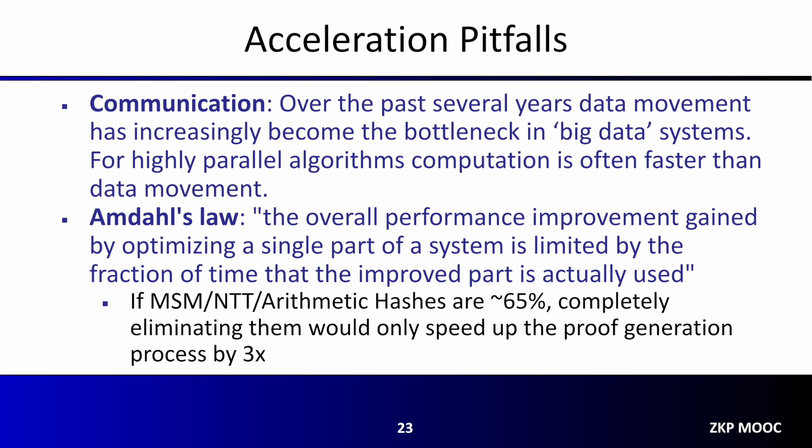A final pitfall of hardware acceleration is Amdahl's Law. Amdahl's Law states that the overall performance improvement gained by optimizing a single part of a system is limited by the fraction of time that the improved part is actually used. More simply, in the case of ZKP systems, if MSM, NTT, and arithmetic hashes make up approximately 65% of the time, then even if these operations are eliminated, the best speedup that can be gained is 3x. In light of the 100,000 to 1 million times overhead of proof generation versus native computation, it's clear that optimization doesn't end here.